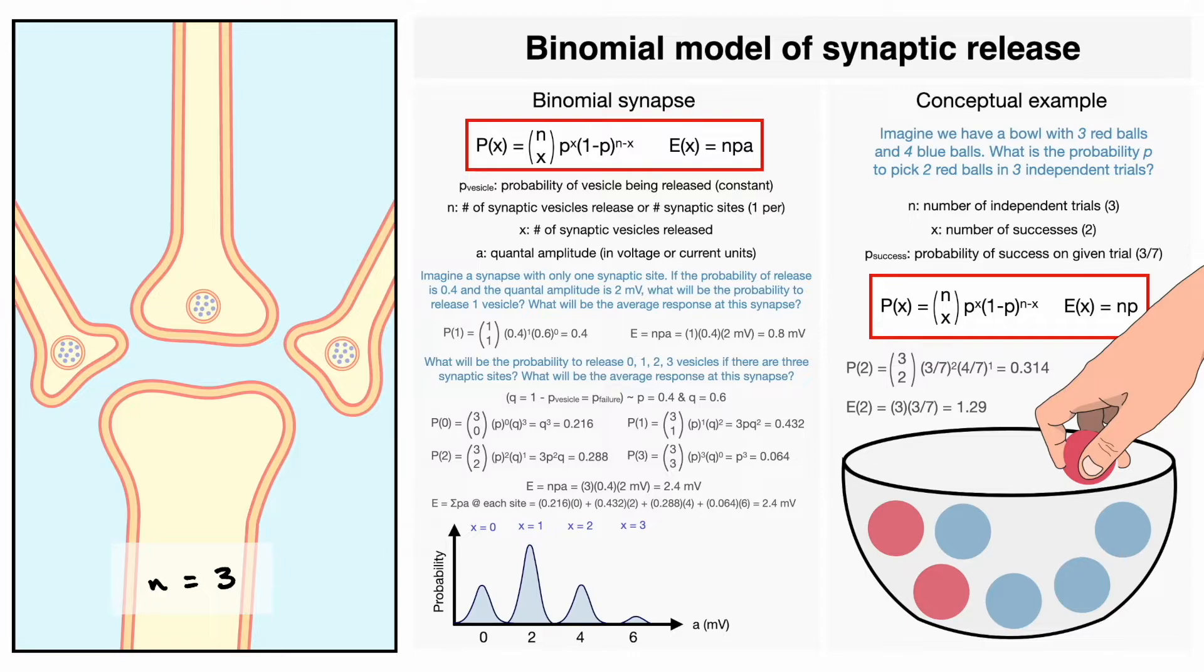You will notice that from this graph, we can get the probability of a certain event from the area under the curve, and we can also get the number of synaptic contacts just by looking at the non-failure peaks. Since there are 3 non-failure peaks, we know that our synapse has 3 presynaptic terminals.